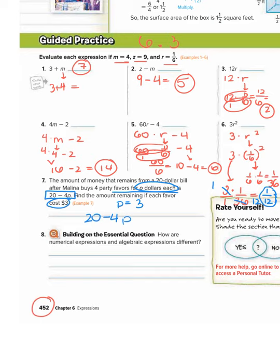So that's 20 minus 4 times 3. Because remember, 4P means 4 times 3, not 43. Okay, now order of operations. We have to multiply first. 4 times 3 is 12. And then 20 minus 12 is 8. So the answer is $8 remaining.